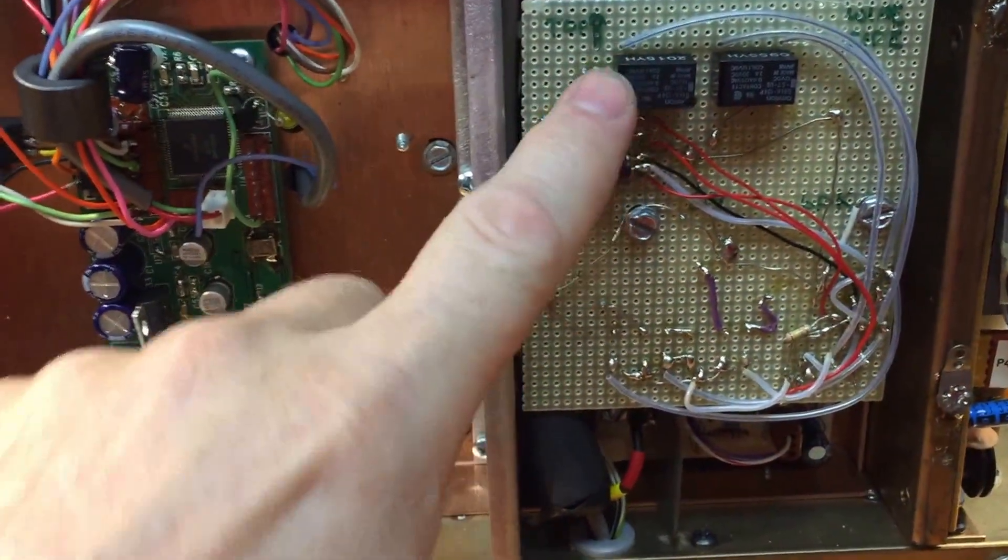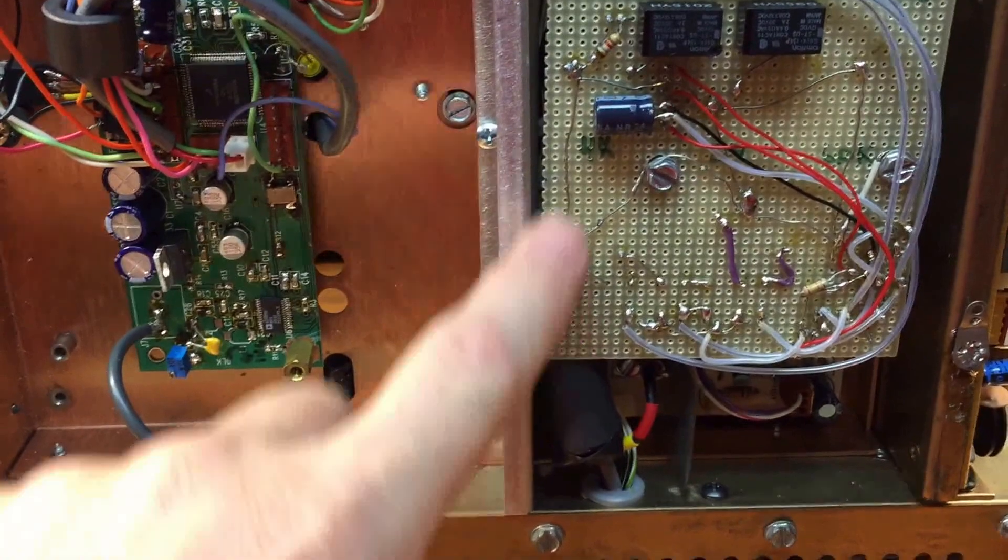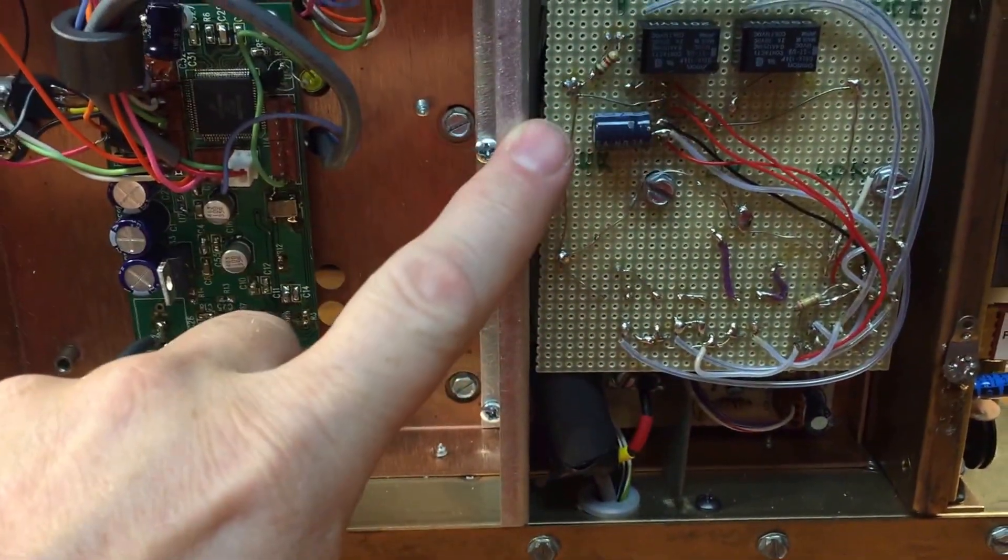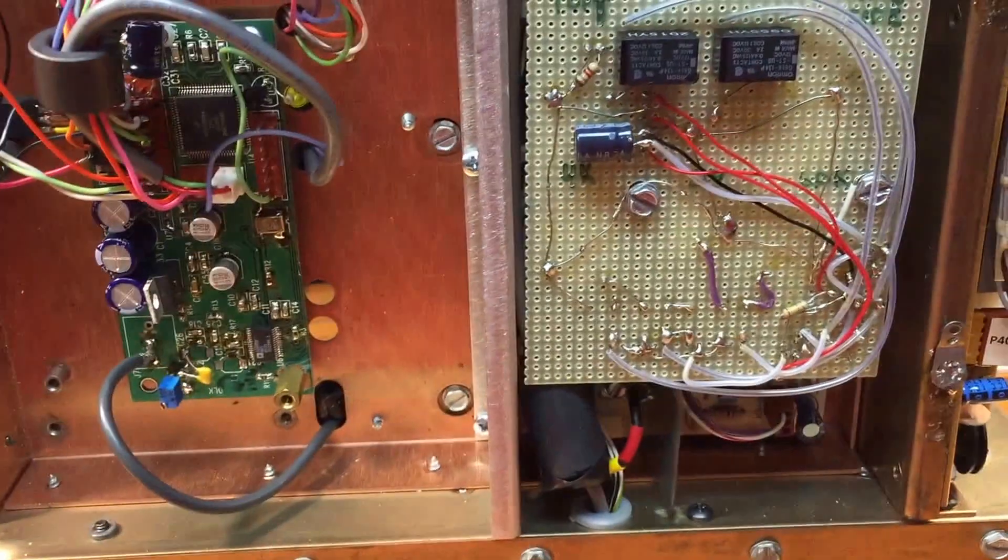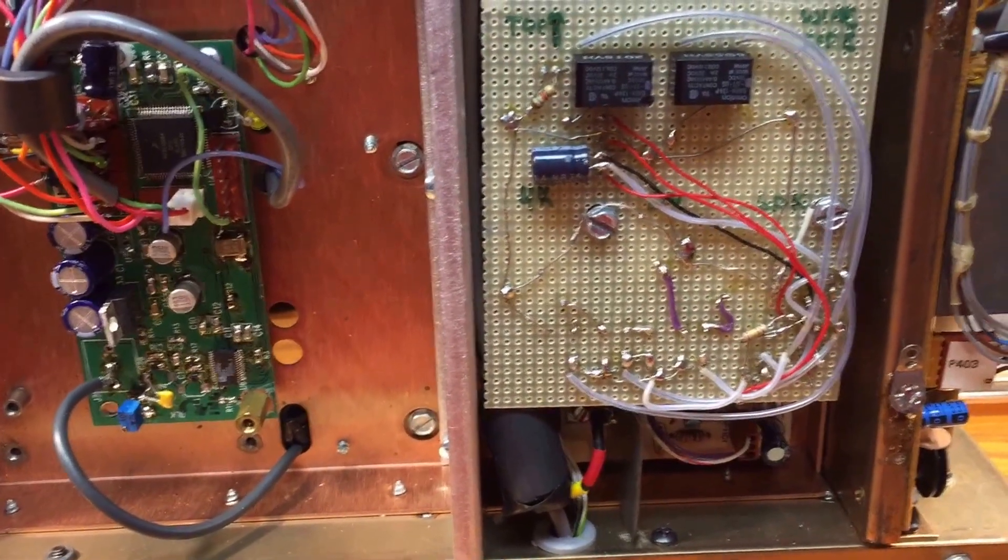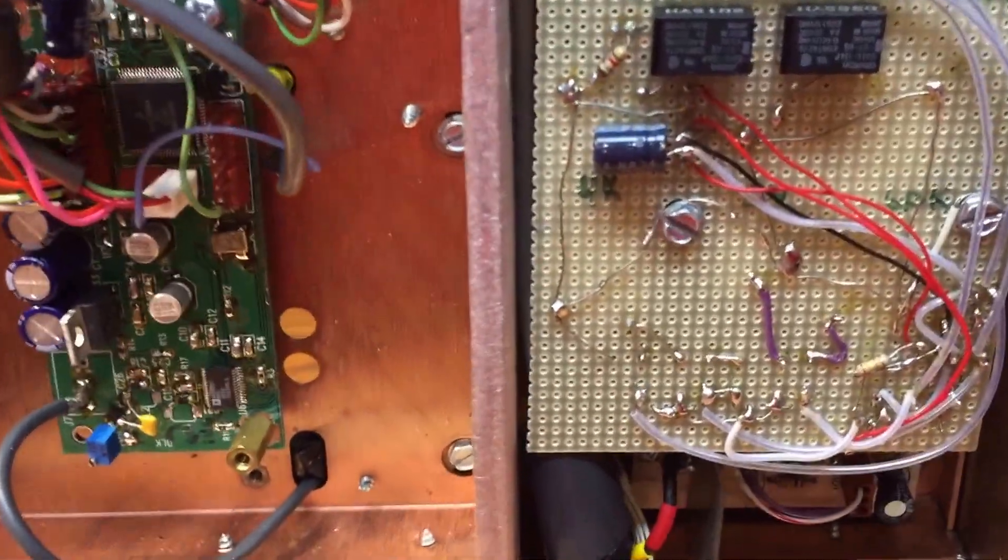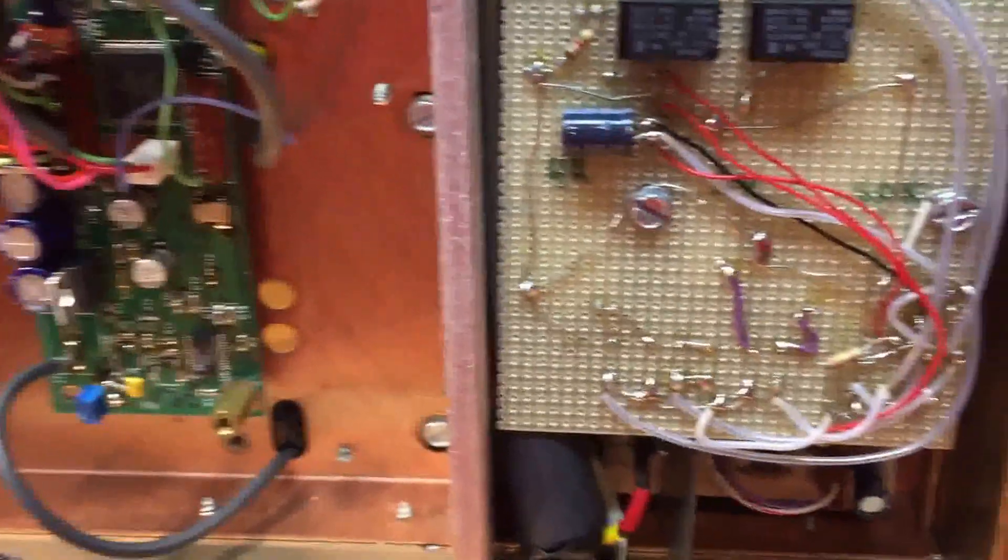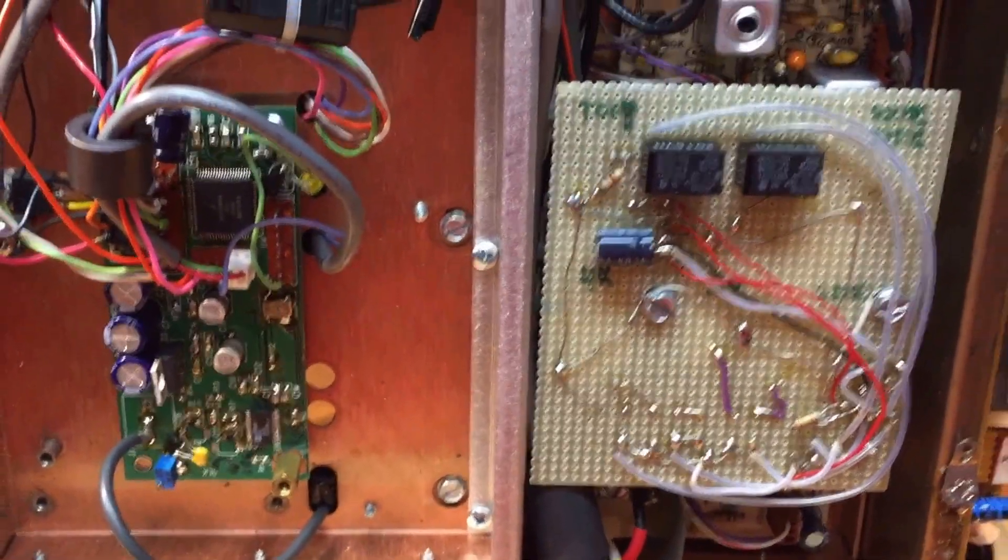These are latching relays so that you can switch between the filters and maintain the filter that you selected without keeping voltage on the relays. And that's about it—those are the major modifications.